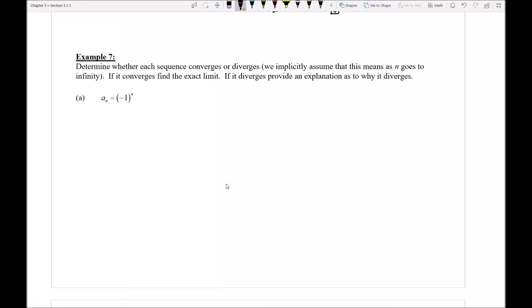Let's take a look at example number 7 and try to start to summarize all the different ideas that we've come up with so far within this section. We want to determine whether each of the given sequences below is going to converge or diverge. If it converges, I want to find the exact limit, and if it diverges, of course I should be able to explain why it diverges.